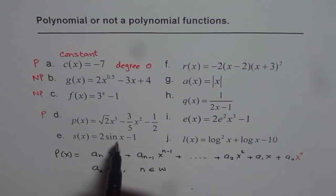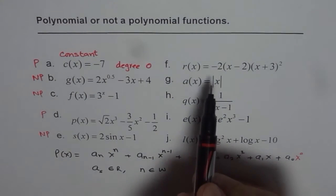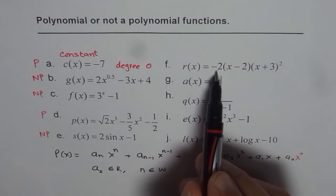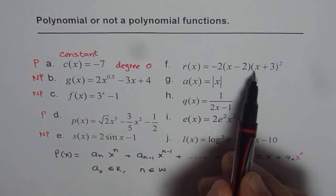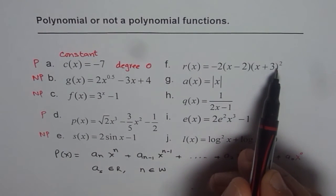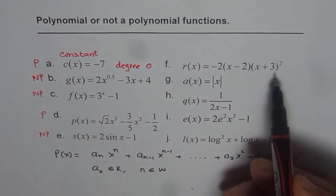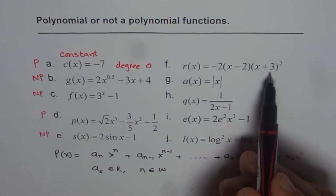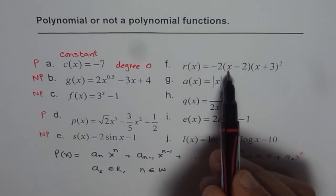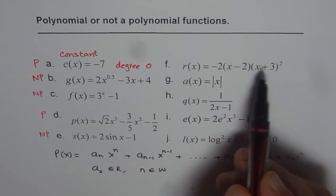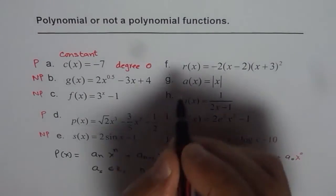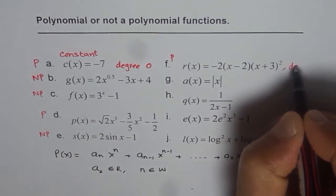Now sine function is not a polynomial. So this is not a polynomial. Now here we have R of x equals to minus 2 times x minus 2 times x plus 3 squared. That is a polynomial. If you multiply and expand it, you will get degree of this polynomial as 2 plus 1, which is 3. So this is a polynomial, and its degree is 3.